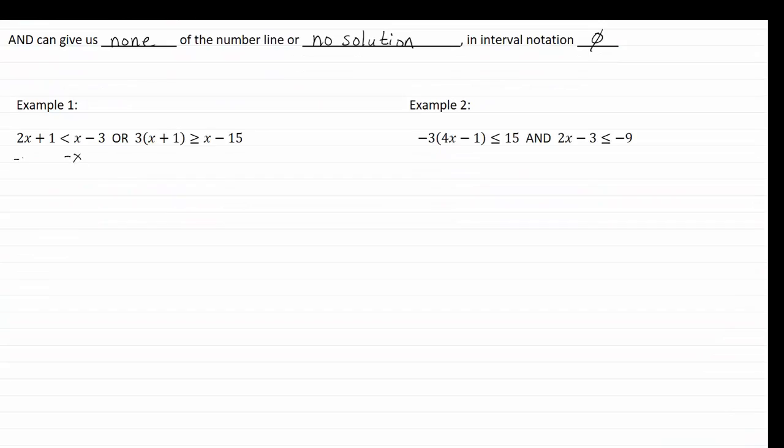Let's get our x's on one side, and we get x plus one less than x minus, whoops, less than minus three. Subtract one, we get x is less than negative four.